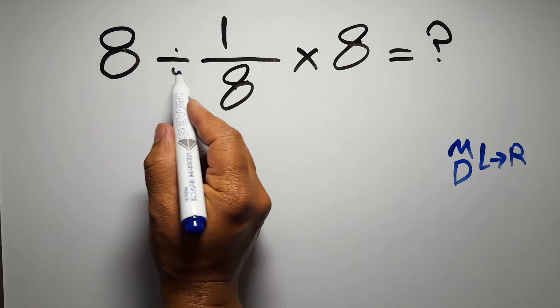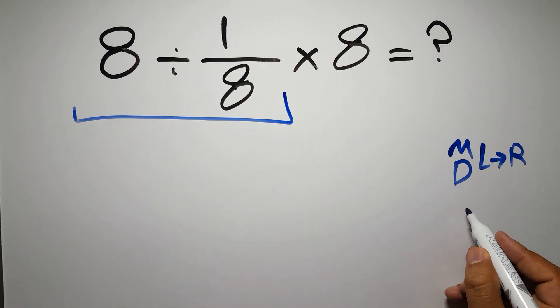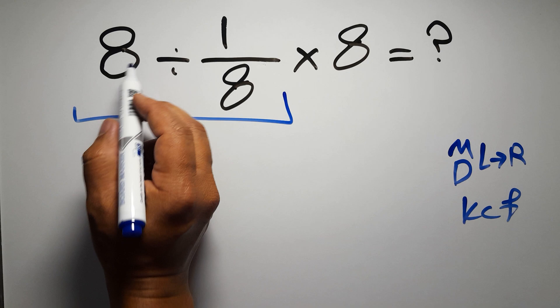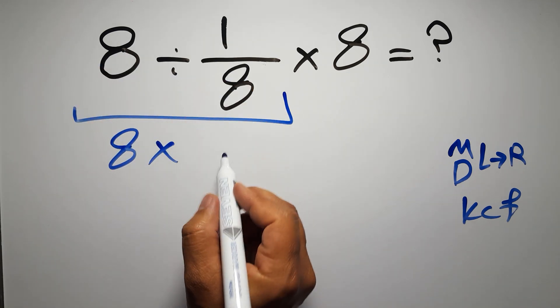So first this division: 8 divided by 1 over 8. According to the KCF rule, K stands for keep, C stands for change, and F stands for flip. We can write keep the first fraction, change division to multiplication, and flip the second fraction.